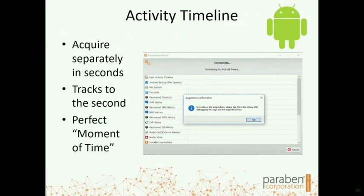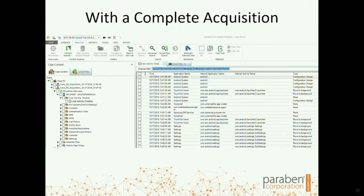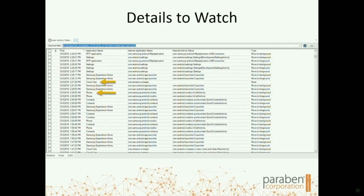The next function is our activity timeline feature, which is a unique feature only available in the E3 platform. This is an acquisition you can do separately — it only takes a few seconds to two minutes to complete. It allows you to track all the activity associated with the device down to the second. You can gather this information with either a complete logical acquisition, visible in the tree view to the left, or with your custom acquisition option.